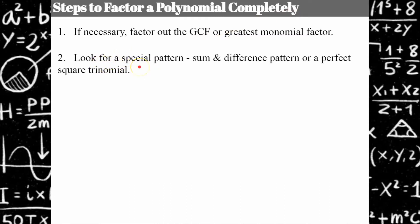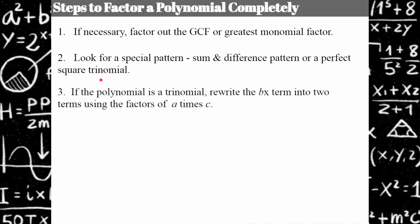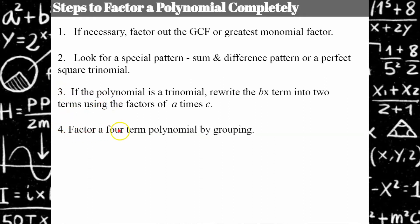Step two, we want to look for a special pattern. In the previous video I talked about the difference of squares pattern and perfect square trinomials. If you haven't seen that video, I suggest you look at it so that you can have a discerning eye when looking at these polynomials — these patterns, if you can identify them, help you to factor. Step three, if the polynomial is a trinomial, rewrite the BX term — the center term — into two terms using factors of A times C, which I've modeled in a previous video. And step four, I'm going to show you how to factor a four-term polynomial by grouping, which is actually easier than a trinomial that needs to be grouped.